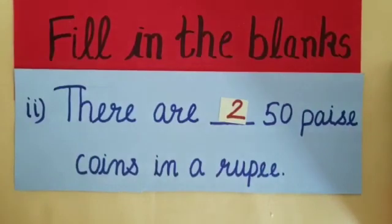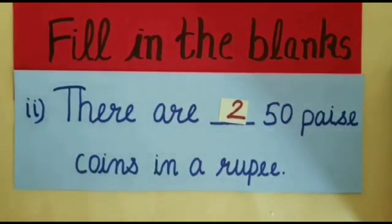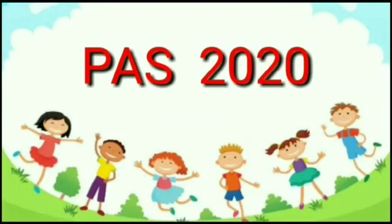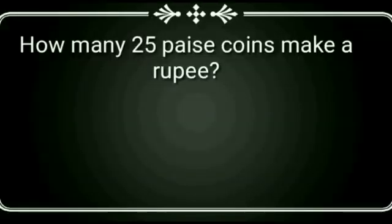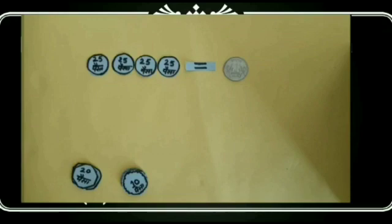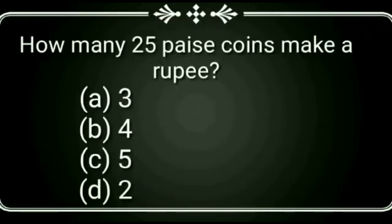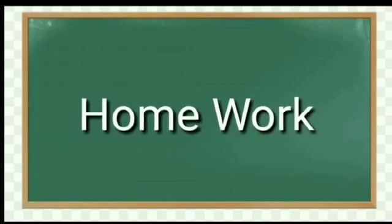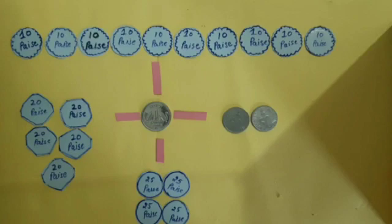Now let's solve some questions related to the Punjab Achievement Survey 2020. Our first question is: how many 25 paise coins make a rupee? The four options are: 1st is 3, 2nd is 4, 3rd is 5, and 4th is 2. My dear students, we have done that 4 coins of 25 paise make a rupee, so its answer will be 4 and we will tick option 4. It is time for homework — you will make coins of 10 paise, 20 paise, and 25 paise with the help of cardboard and paper, then count how many such coins make a rupee. Thank you.